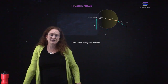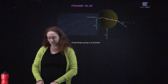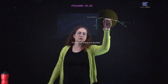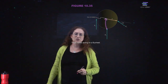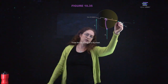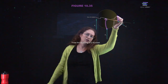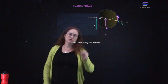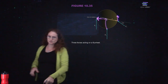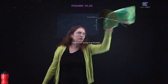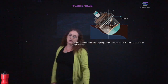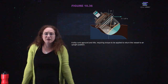Three forces acting on a flywheel: the moment arm is different depending on where you are along the flywheel. One force is parallel to the moment arm — it's not going to create any torque. The second has a component perpendicular to the moment arm, so it will cause rotation. The third will cause the maximum rotation because the force is roughly perpendicular to the moment arm. Where you act on the object you're rotating influences how much it starts rotating.